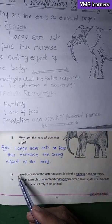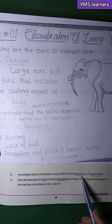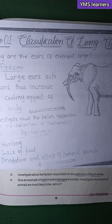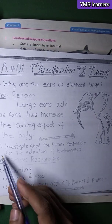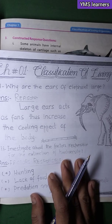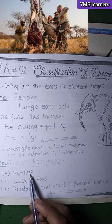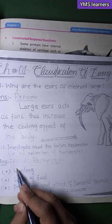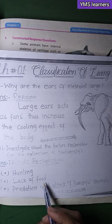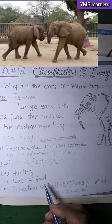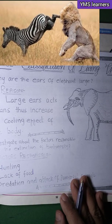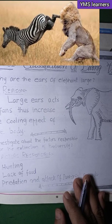Investigate the factors responsible for the extinction of biodiversity. The factors responsible include: hunting (shikar), extreme conditions, lack of food, predation, and attack by powerful animals.